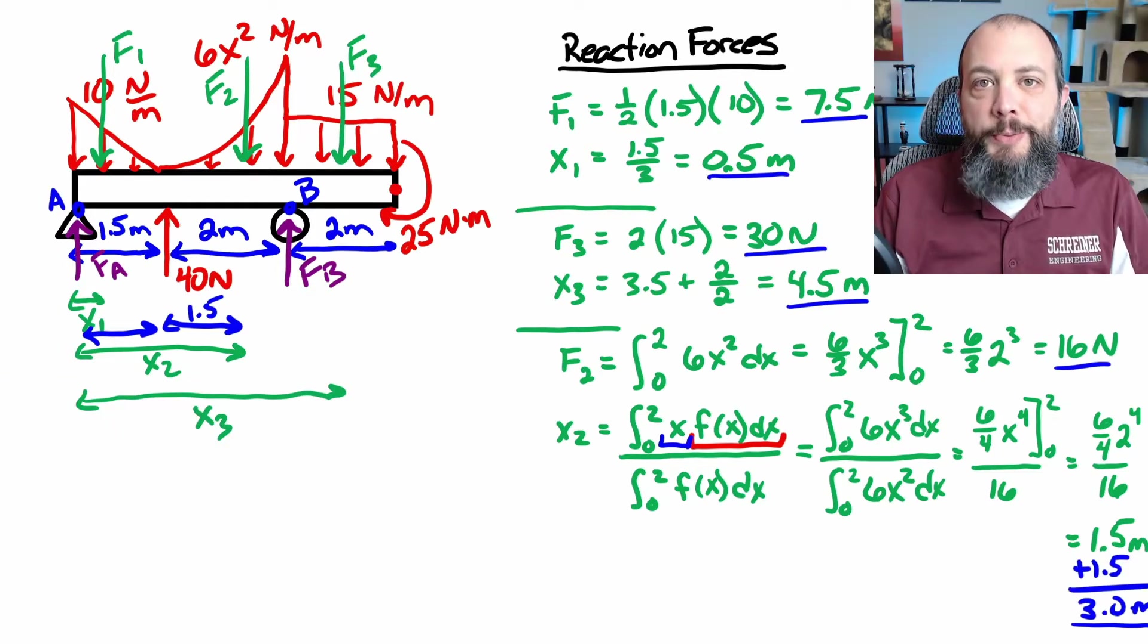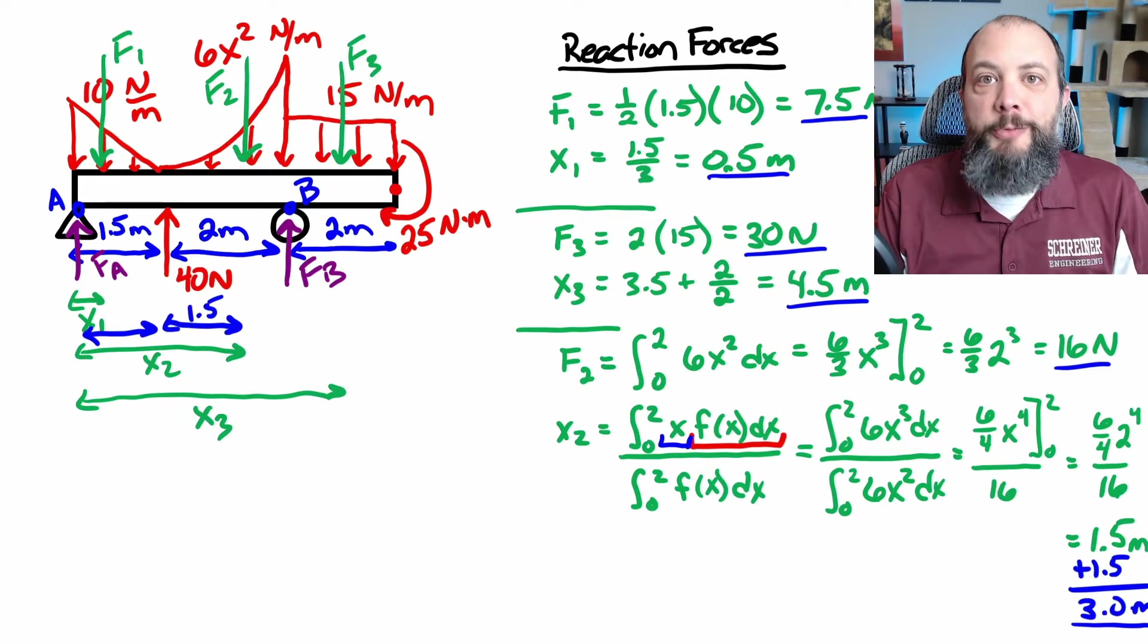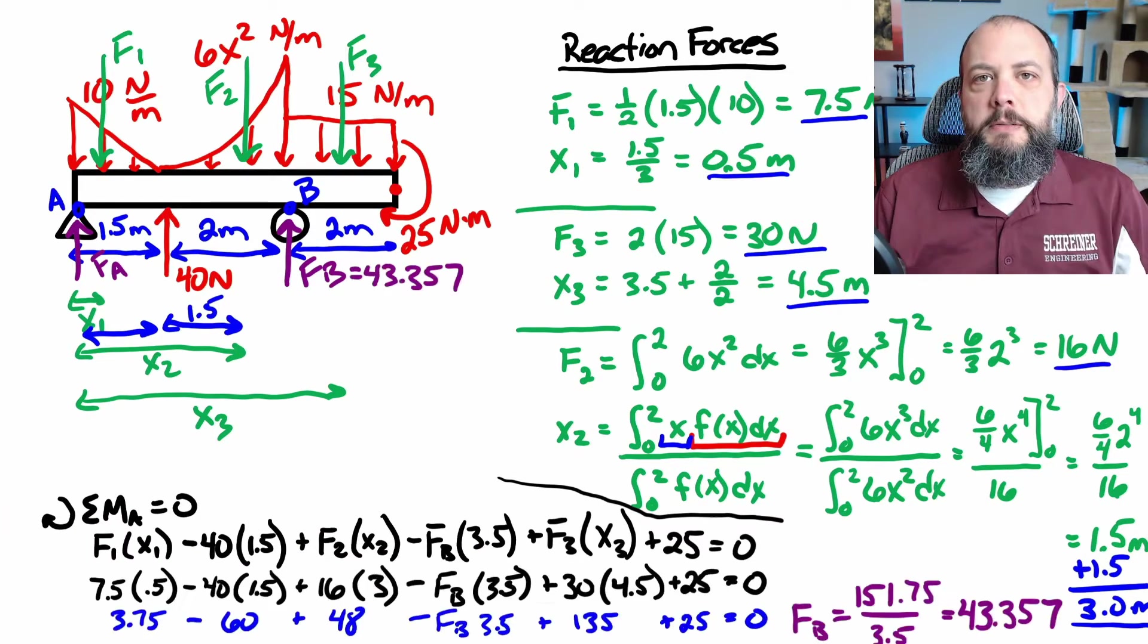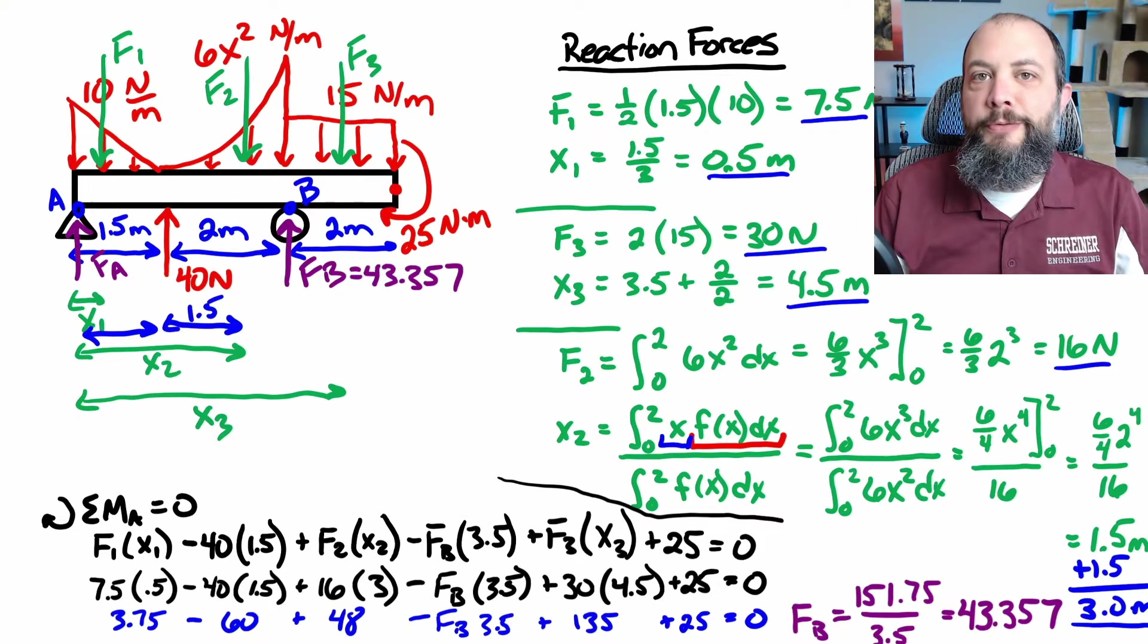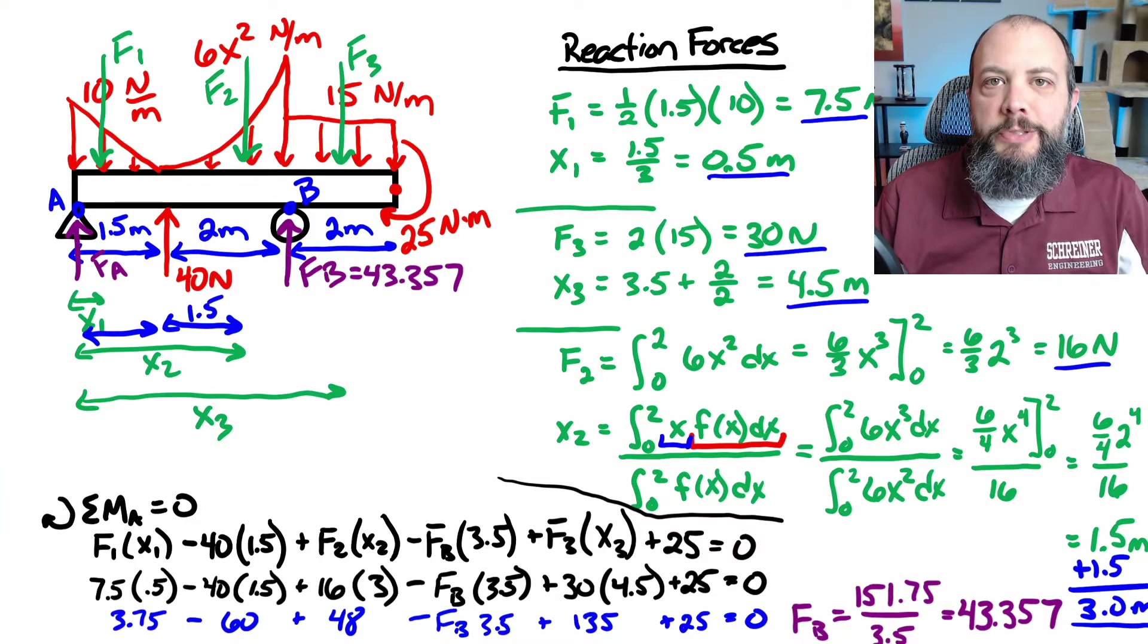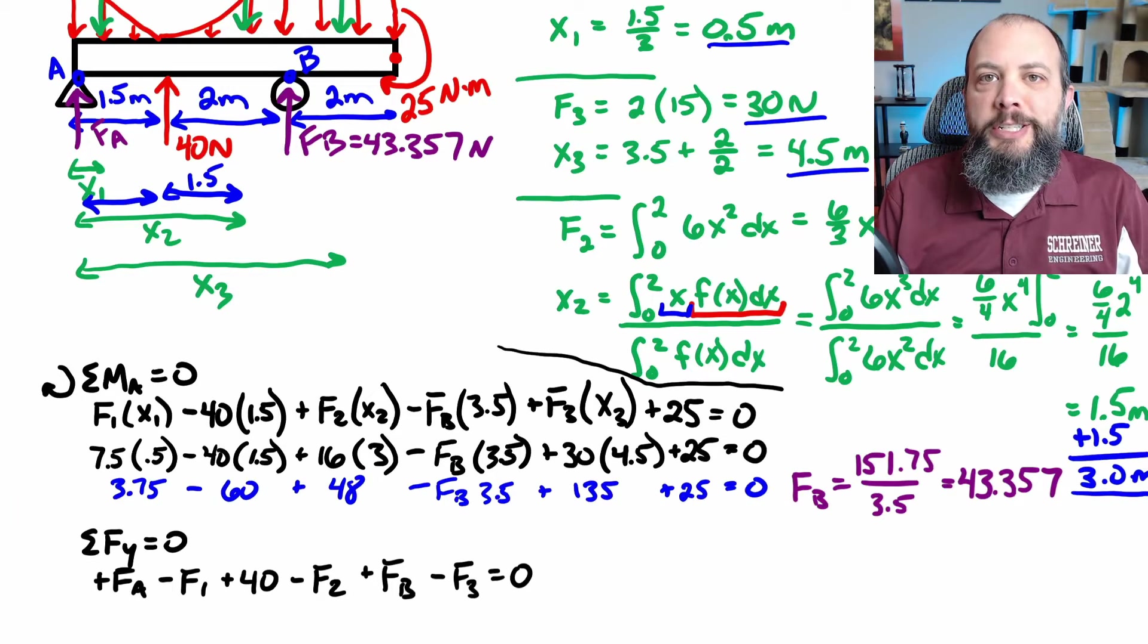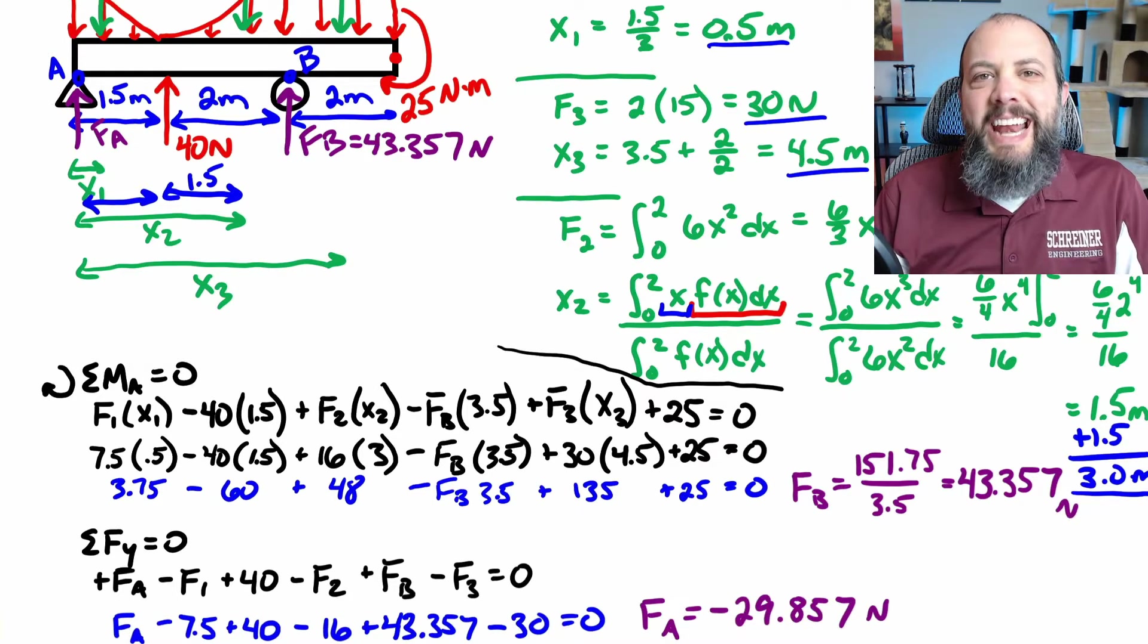Now that I've solved for all the distributed loads, time to actually do a sum of moments and sum of forces to find the reaction forces. So I started by doing a sum of moments about point A, and once I plug in all the numbers, FB will be the only unknown. And plugging in numbers and doing a little bit of calculator work, I get a value for FB of 43.357 newtons. And to solve for FA, I'll do a sum of moments in the y direction, with all of the forces still present, but this time the moment is not included in this equation, since it's a moment, not a force. And I get an answer for A that is negative 29.